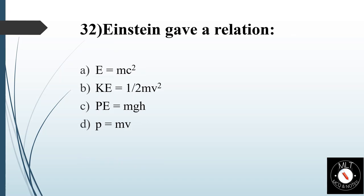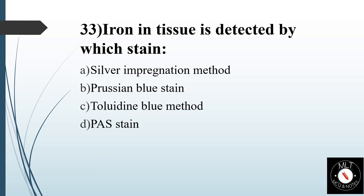Thirty-second question. Einstein gave a relation. Option A: E = MC². Option B: KE = ½MV². Option C: PE = MGH. Option D: P = MV. Answer is Option A: E = MC².